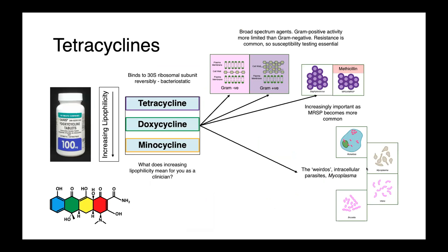Tetracycline antibiotics bind to the 30S ribosomal subunit reversibly and are bacteriostatic, so they don't kill the bacteria, they simply inhibit their growth.